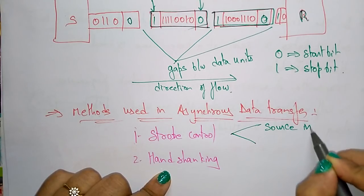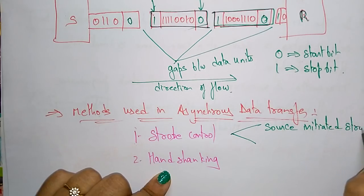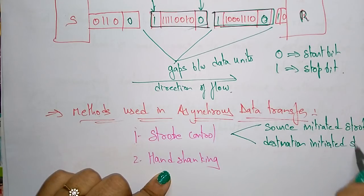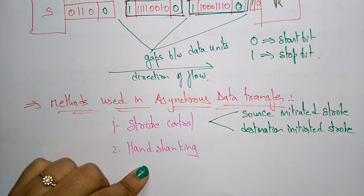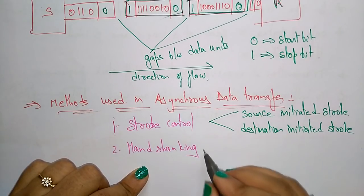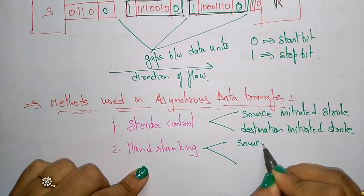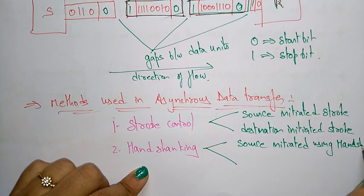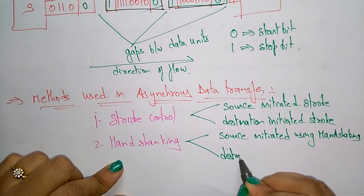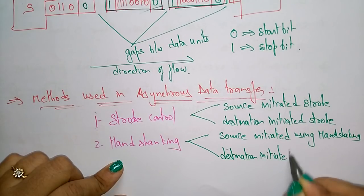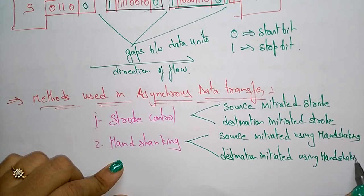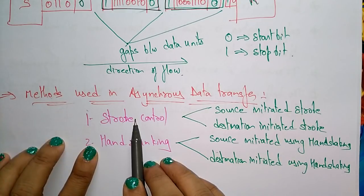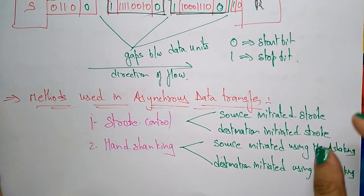In strobe control there are two subtypes: source initiated strobe and destination initiated strobe. Similarly for handshaking there are: source initiated handshaking and destination initiated data transfer using handshaking. In the next video I will explain clearly what strobe control data transfer and handshaking control data transfer are. Thank you.